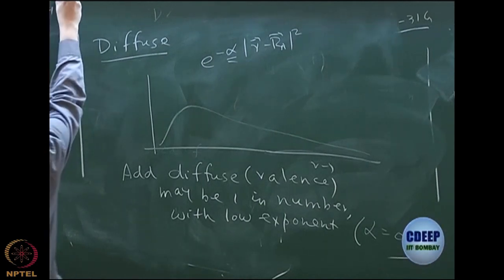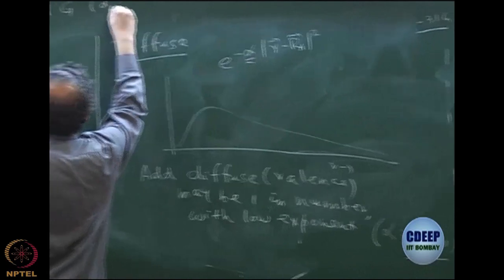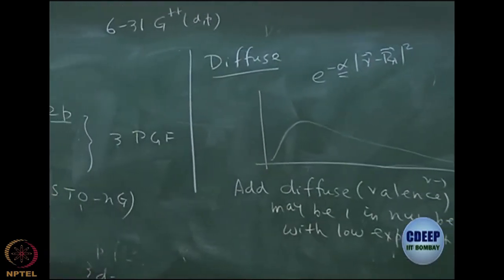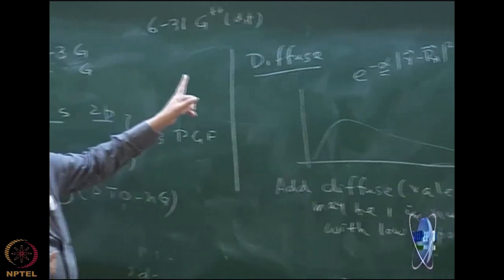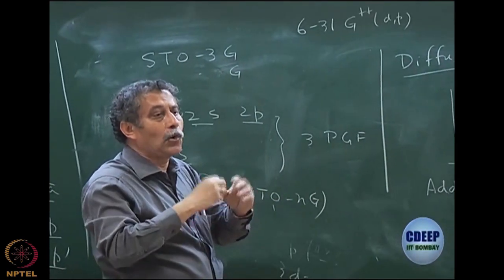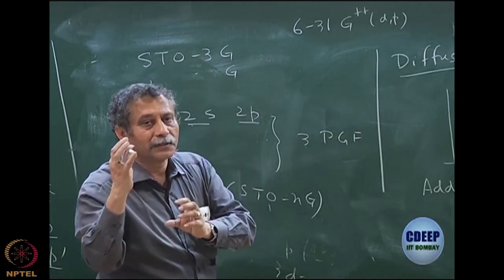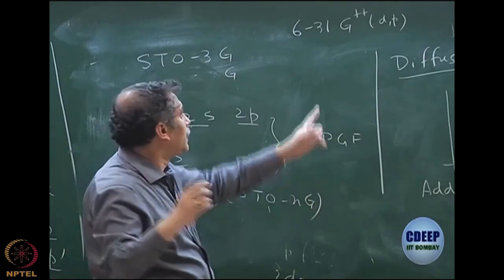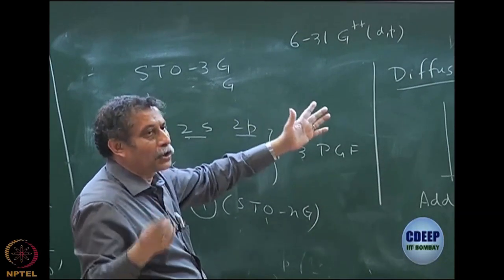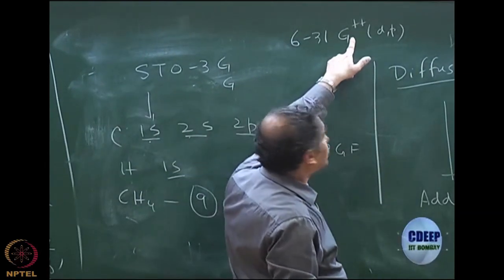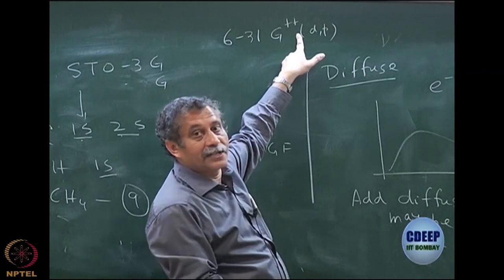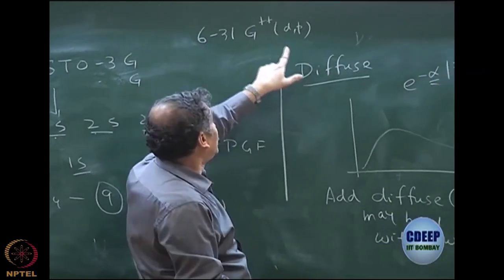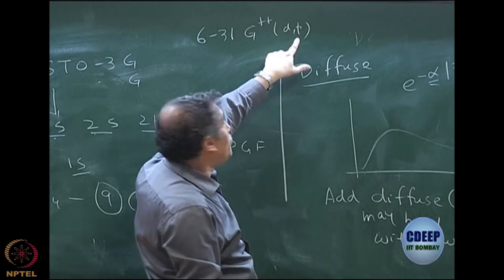The notation 6-31G++(d,p) means: one diffuse function for carbon and hydrogen plus one set of polarization functions, D and P. Many times people use diffuse functions only for the heavier atoms — only for carbon, not for hydrogen. But you can use both. Typically people add one additional S and one additional P for carbon, and one additional S for hydrogen.